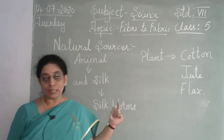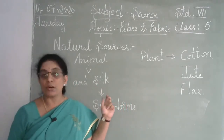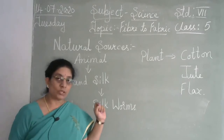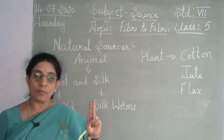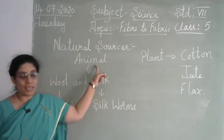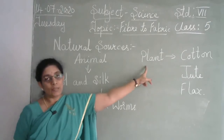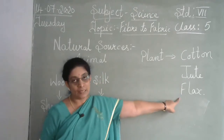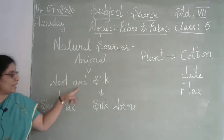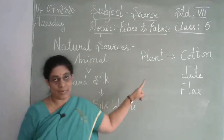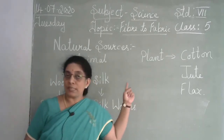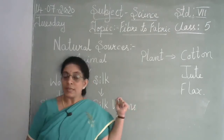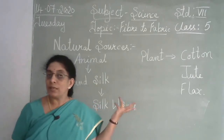In sixth standard, the sources of fibers are of two types. The natural sources of fibers come from two main categories: animals and plants. From plants you get cotton, jute, and flax. From animals you get wool and silk. In sixth standard you already read how cotton is extracted from the cotton plant and how jute is obtained.